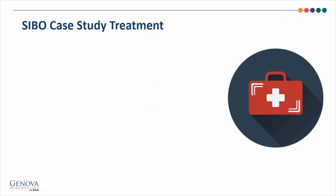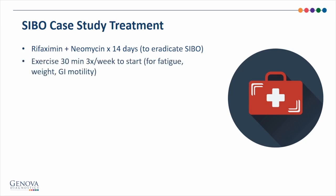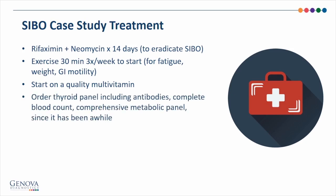Let's talk about treatment for this case. Rifaximin plus neomycin was chosen for eradication of the overgrowth. When methane is present, studies show better clinical improvement and eradication of methane with the combination of antibiotics versus either antibiotic alone. Exercise was recommended for 30 minutes three times per week to start, increasing over time, to help with weight loss, fatigue, and to improve GI motility. It was also recommended that she start on a quality multivitamin. It has been a while since this patient had blood work, and it's important to have up-to-date blood work, including a thyroid panel that includes antibodies, as well as a complete blood count and comprehensive metabolic panel.